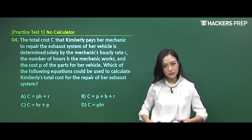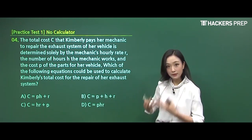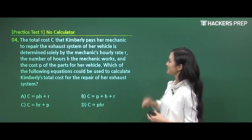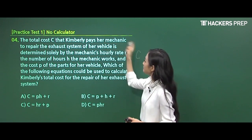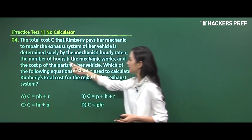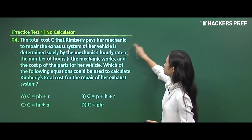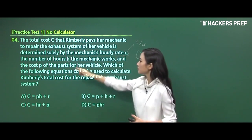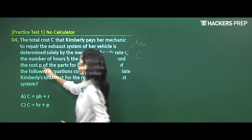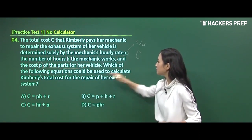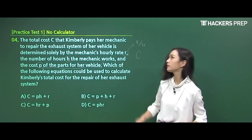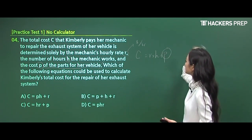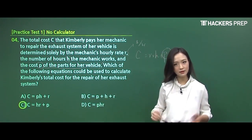So let's do number 4 here. Our first word problem suggested as the fourth question. Let's read the question together and see how we need to approach the question and try to pull out the information that we need in a mathematical sense. First sentence: The total cost, C, that Kimberly pays her mechanic to repair the exhaust system of her vehicle is determined solely by the mechanic's hourly rate, R. So this is the amount of money that she pays per hour. And the number of hours given the variable H. So I just circled the two variables that popped up in this question. And cost of the P is given for parts for her vehicle. Which of the following could be used to calculate total cost for the repair? So what do you have to do? The hourly rate, you multiply it by the number of hours that person worked, and you finally add the material cost. And do we have an equation that matches this? I think we do. So you circle C and we're done.